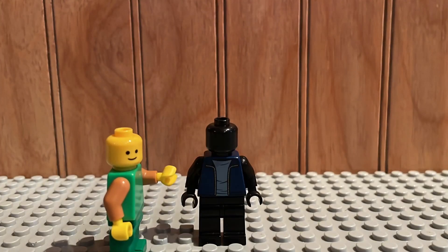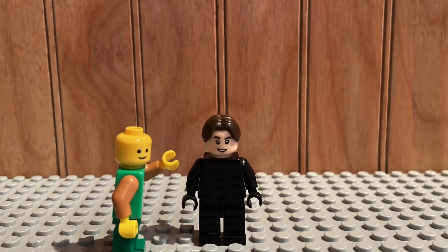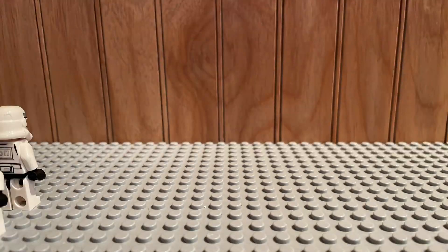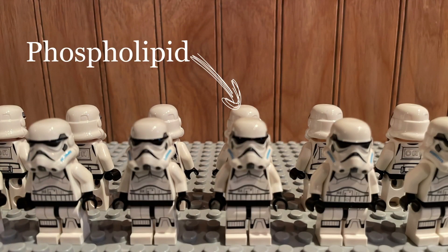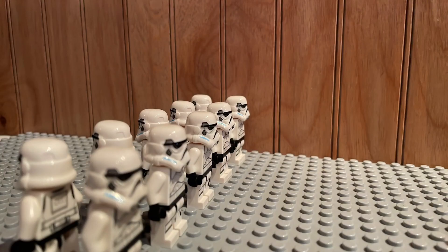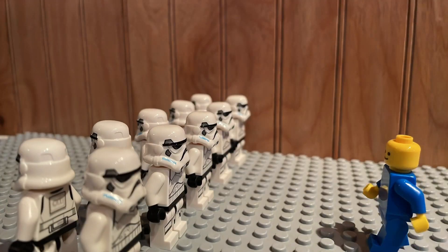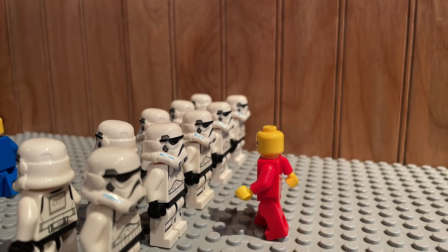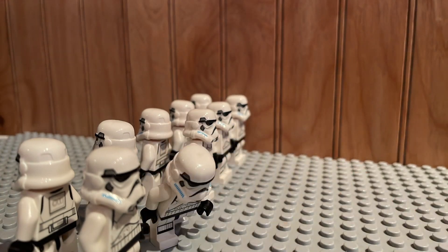It all begins in the brain. In order for food to get to your stomach, your brain needs to send a signal to eat. This is where neurons come in. Neurons are long cells that use electrochemical reactions to send information. A neuron's membrane, or outer layer, is made of a double layer of phospholipids, also known as the lipid bilayer. This bilayer allows some things, like water, to pass through freely, while stopping larger molecules from passing.